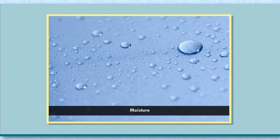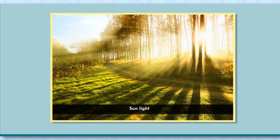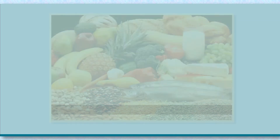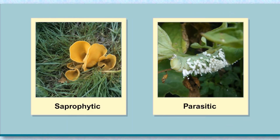Water is the most essential requirement and is available as moisture. Temperature: The best temperature for the growth of microbes is between 25 and 38 degrees Celsius. Sunlight: Most microorganisms thrive best in dark places, and direct sunlight kills them. Food: Depending upon the food supply, microorganisms can be saprophytic, parasitic, photosynthetic, etc.